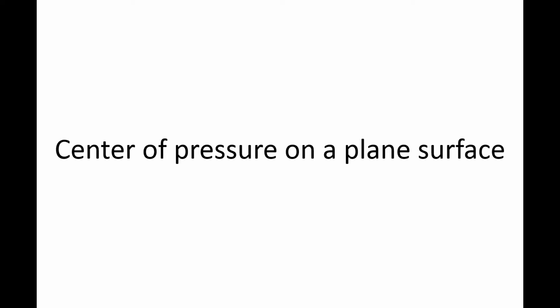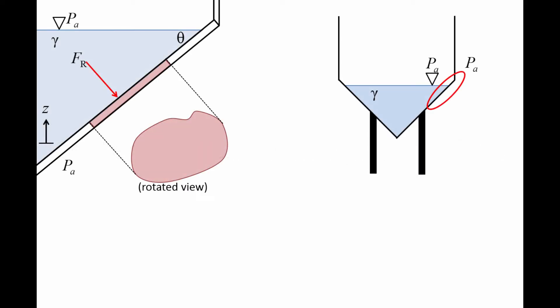In this lesson, we will derive equations for determining the location of the center of pressure on a plane surface. The tank on the right contains a liquid which is exposed to the ambient pressure. We focus on a section of wall of arbitrary shape and want to determine the location where the resultant fluid pressure force, FR, acts. This location is called the center of pressure. Knowledge of the location of center of pressure is important in situations where a gate may swing open or a retaining wall may tip over.